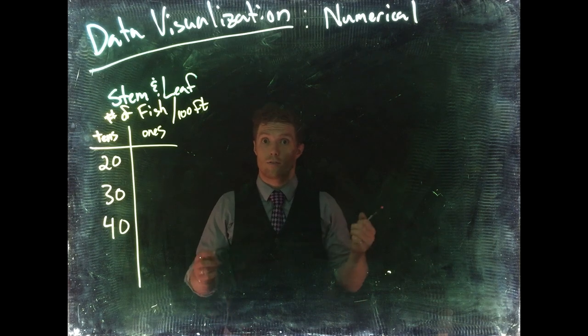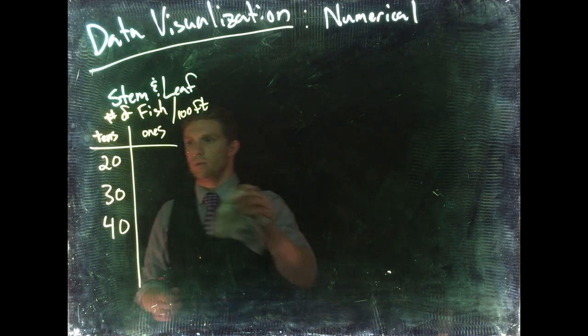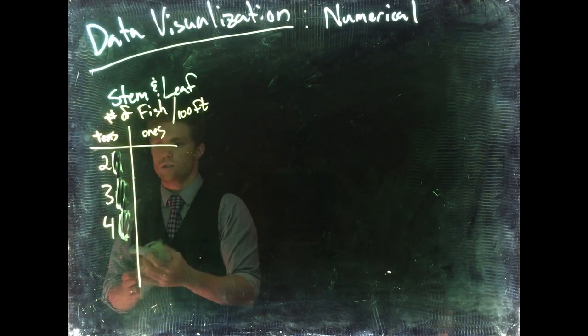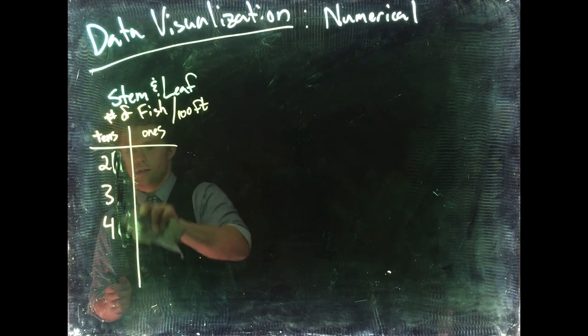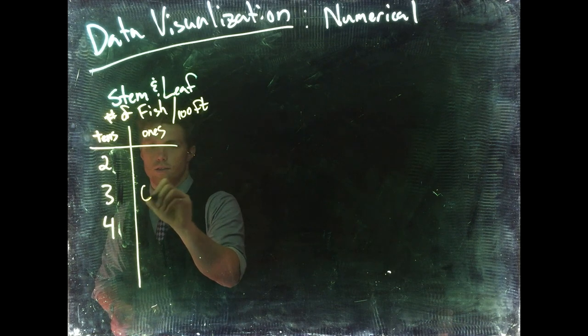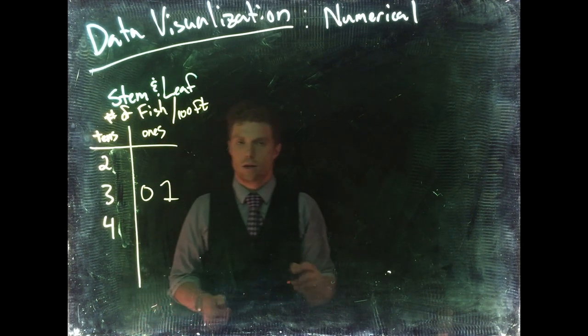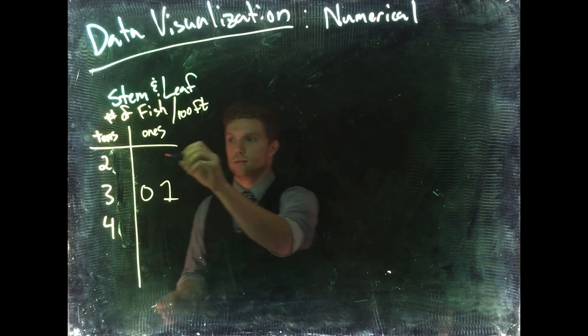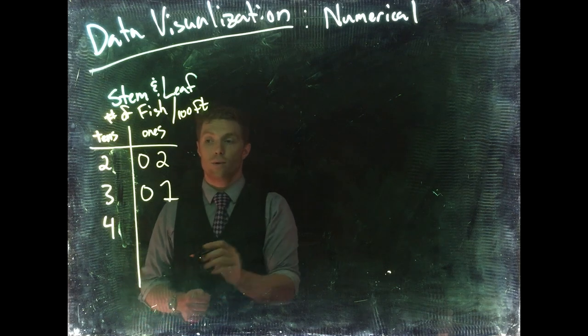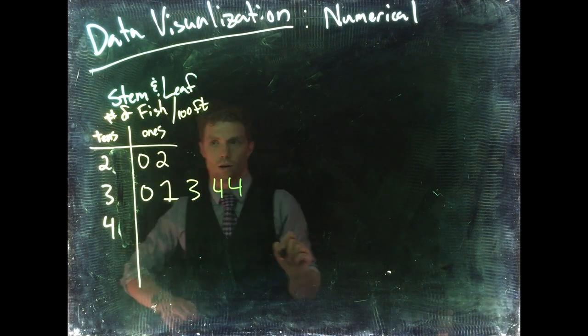The first time we went out, our first hundred feet, we saw 31. In our tens place, we should erase this zero because our ones are going in the ones spot. We saw 30, then we went out again and saw 31. We go out again and saw 20, maybe the second time we saw 22, then 33 and 34, another 34, and we keep adding.